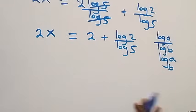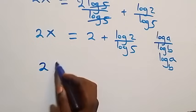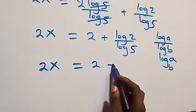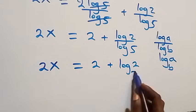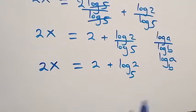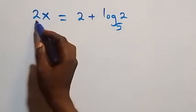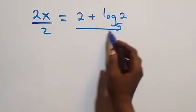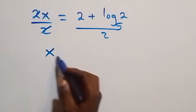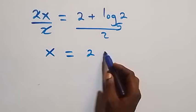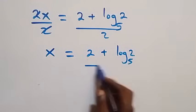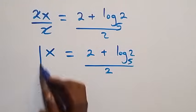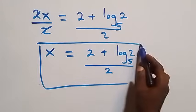So we have 2x equals 2 plus log 2 to base 5. Then we divide both sides by 2 — the 2s cancel — and we have x equals 2 plus log₅2, all over 2. So here we have the value of x in this problem.